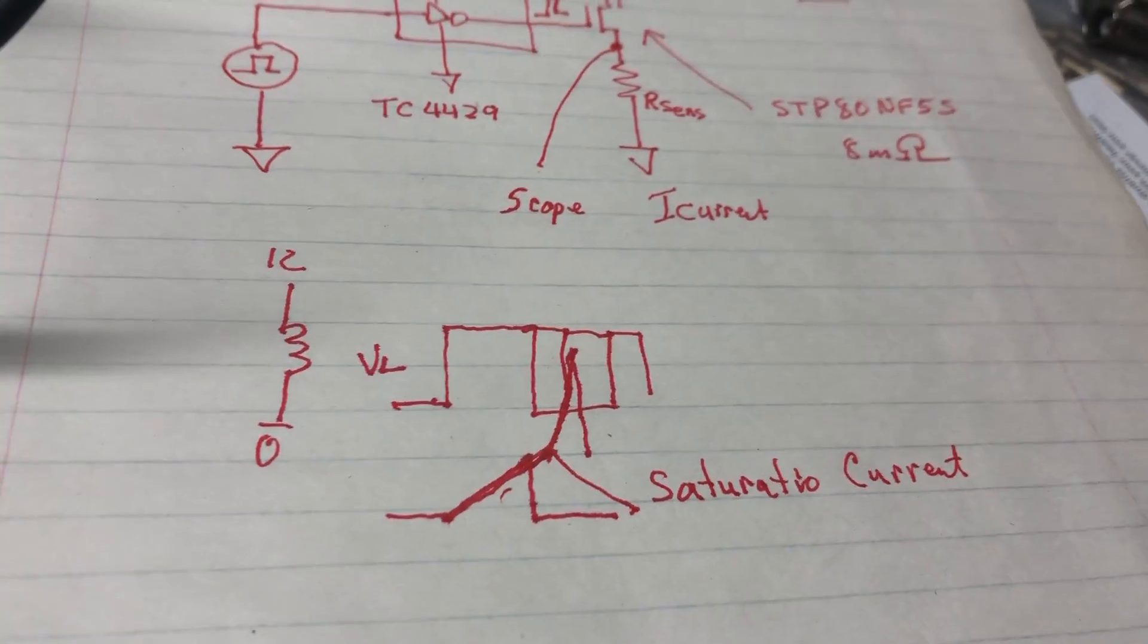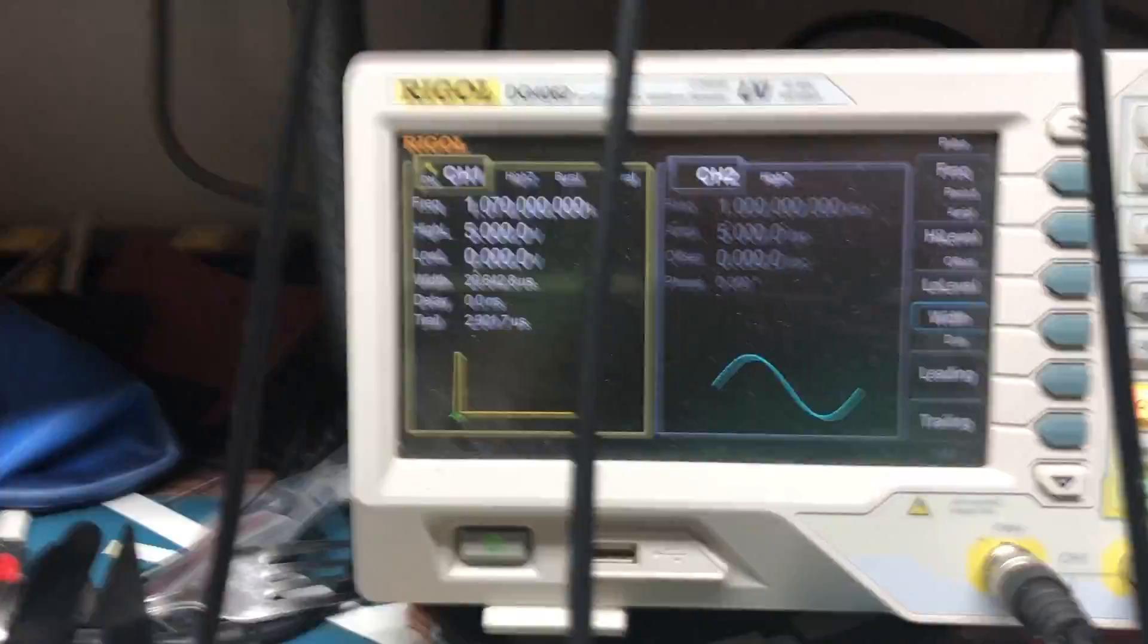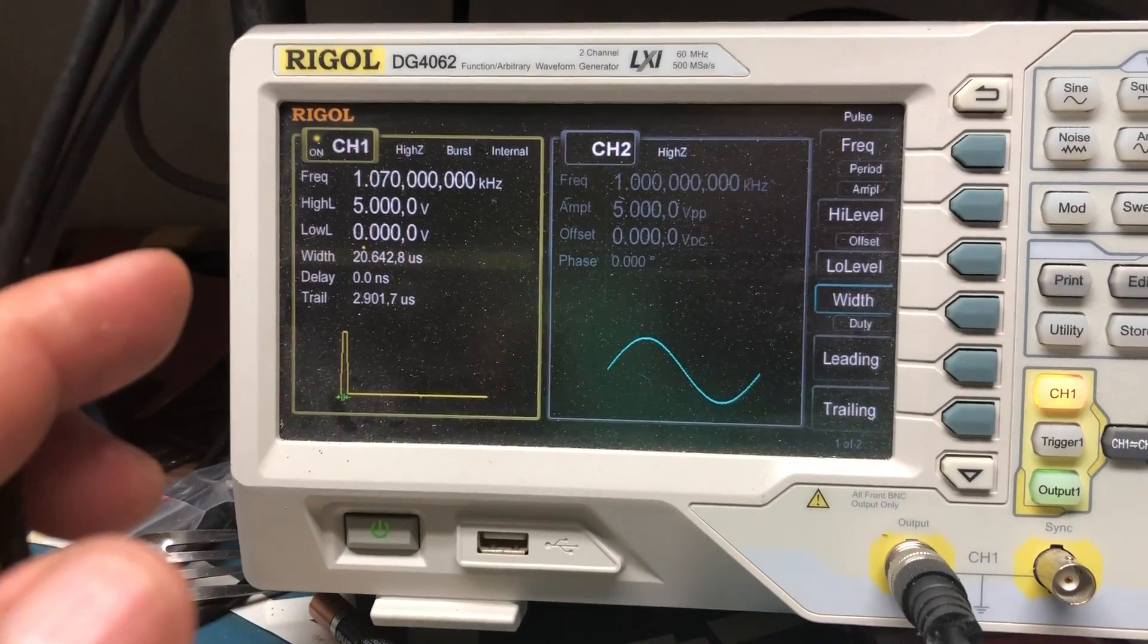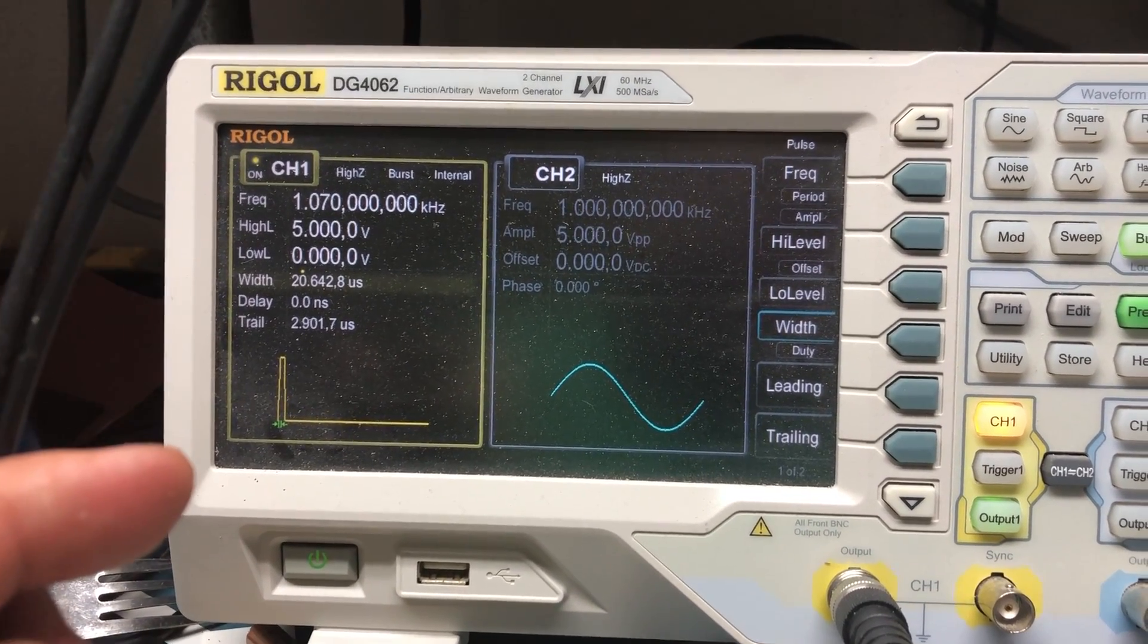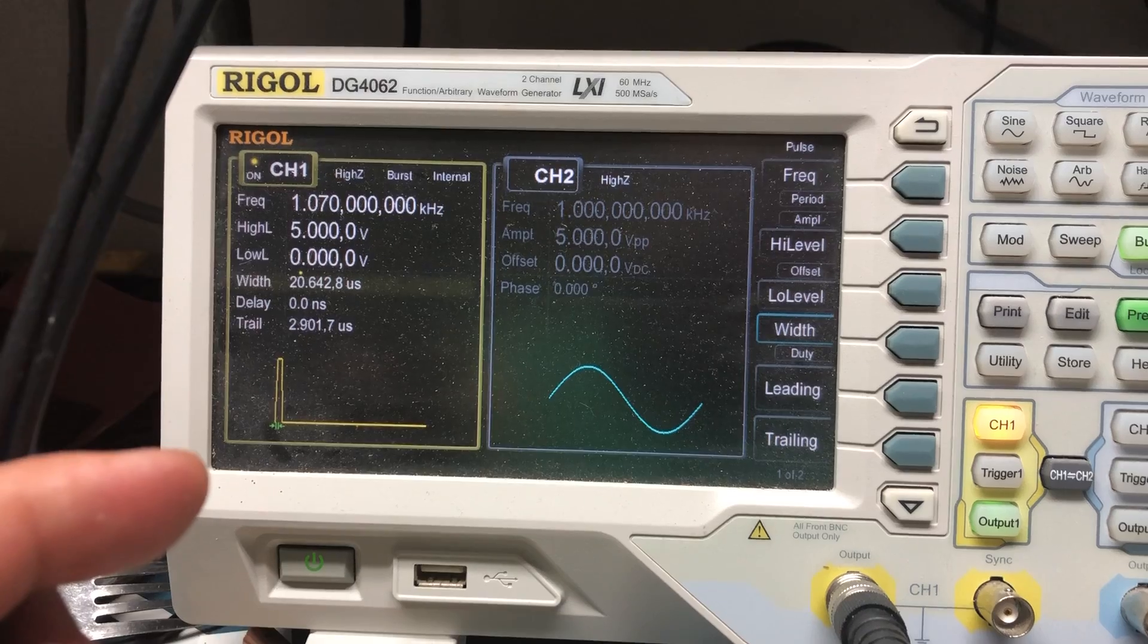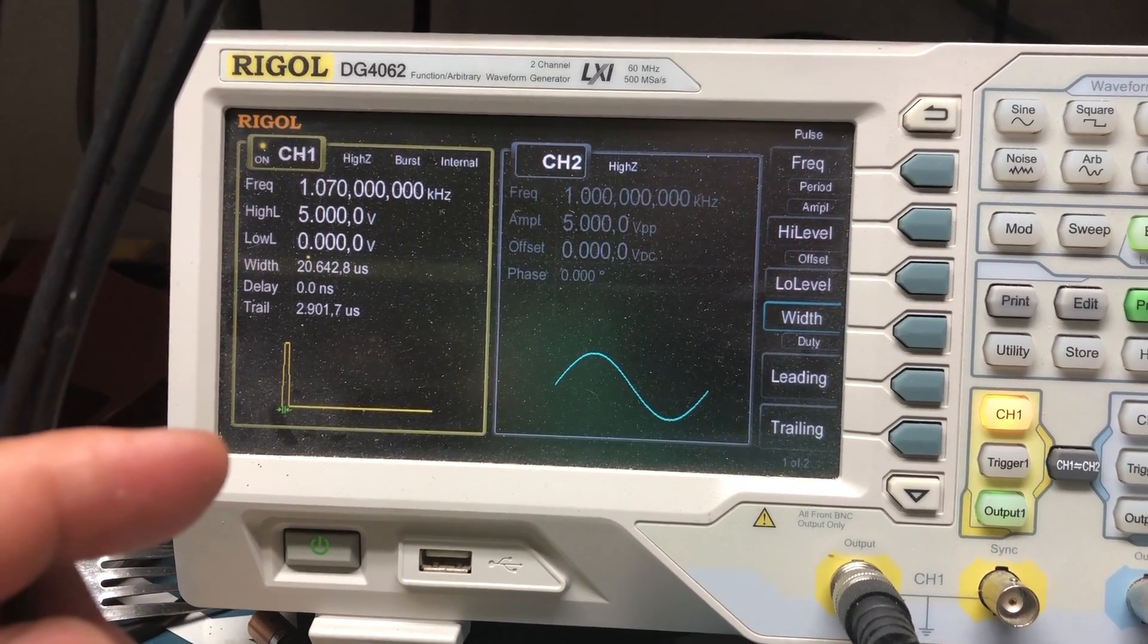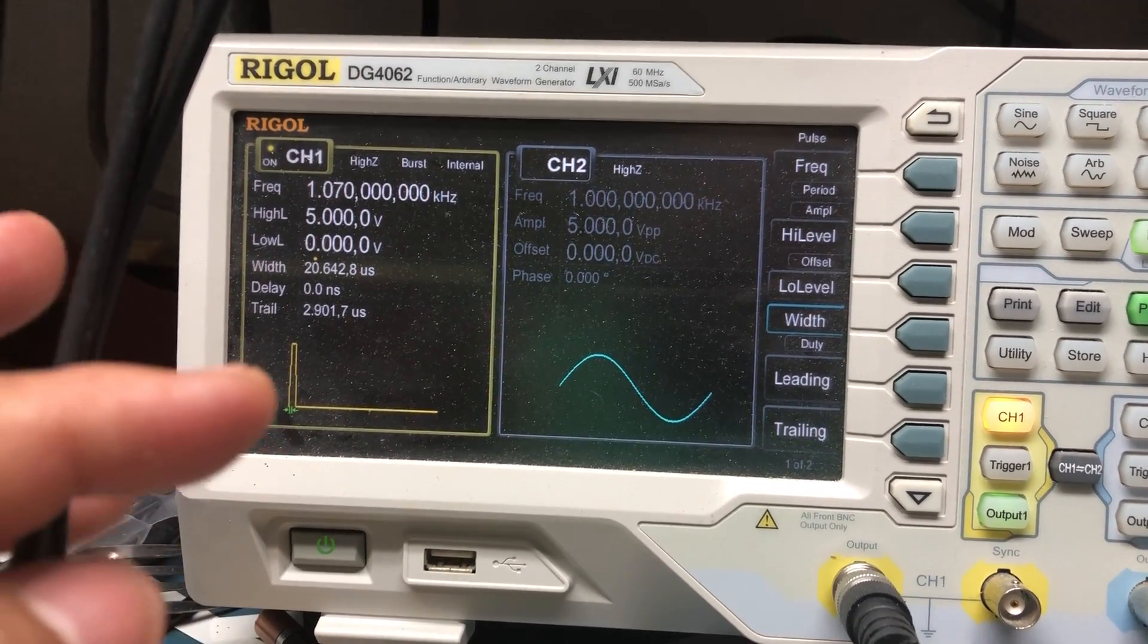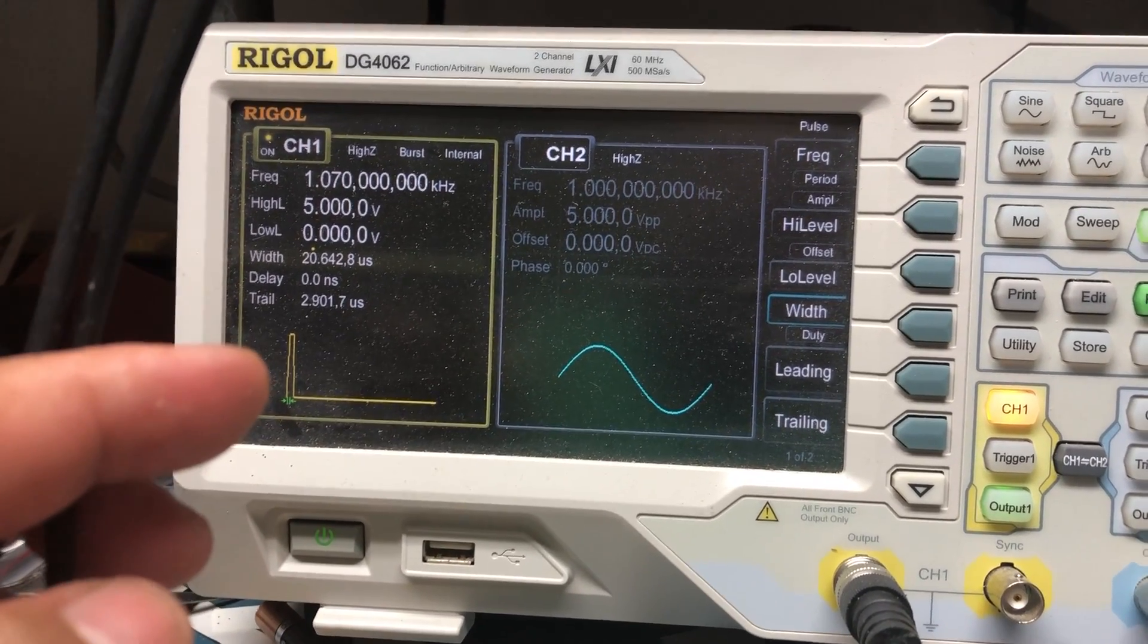So I have a piece of an inductor or a core here. Here is the function generator. Unfortunately this generator, in my opinion, lacks a very fast leading and trailing edge.